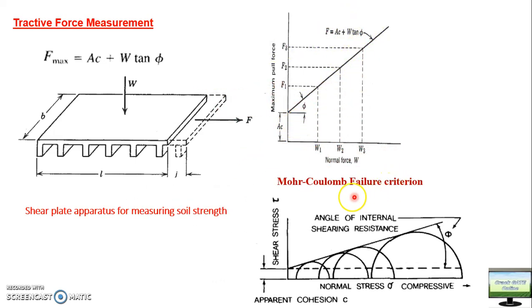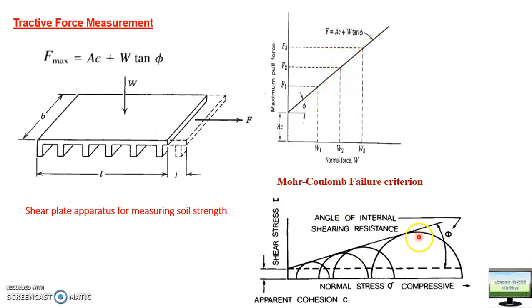But it is not so simple — it comes from Mohr-Coulomb's failure criteria. This is a very important concept which you might have read in your strength of materials book as well as your soil science book. Basically, we are plotting shear stress versus normal stress, and you have different Mohr's circles with respect to different loads and forces. You plot all these half circles and then draw a line tangent to all of them — that line is nothing but the line of AC plus W tan phi. This is how the angle of internal friction is derived, and this is how traction measurement is done experimentally. Basically it is an experimental concept done for different soil conditions and different load conditions in the lab.